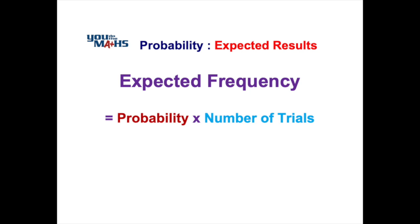Using our formula, what we need to know is the probability of getting a prime number multiplied by the number of trials. In this case the number of trials is fifty.